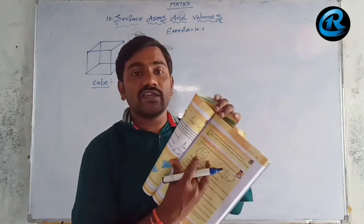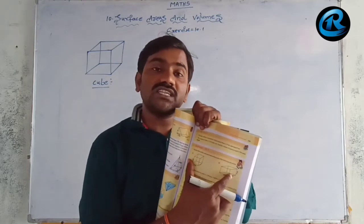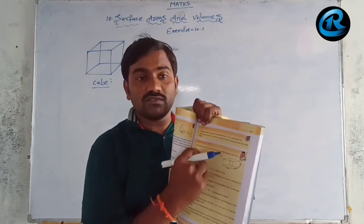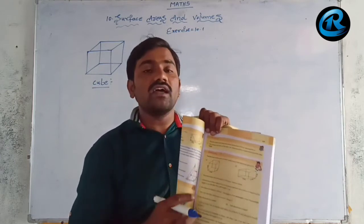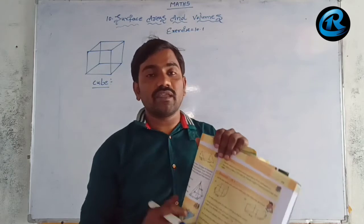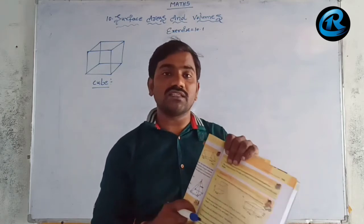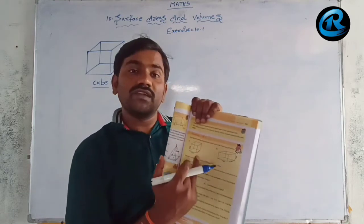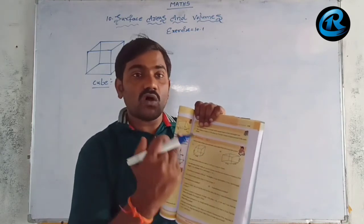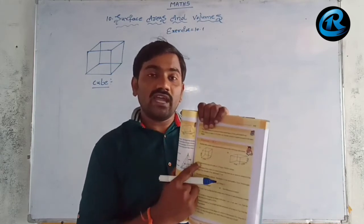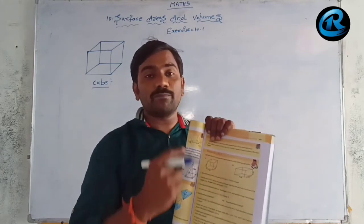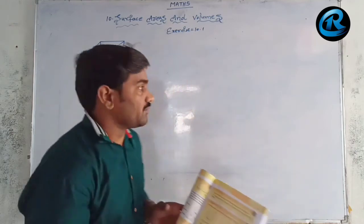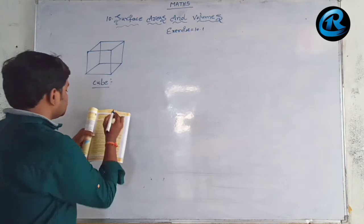A cube and a cuboid can be considered as right prisms because the top and bottom bases are regular polygons and the remaining lateral surface areas are rectangles. In a cube there are squares, and all squares can be considered as parallelograms. So a cube is a right prism, and a cuboid is also a right prism.